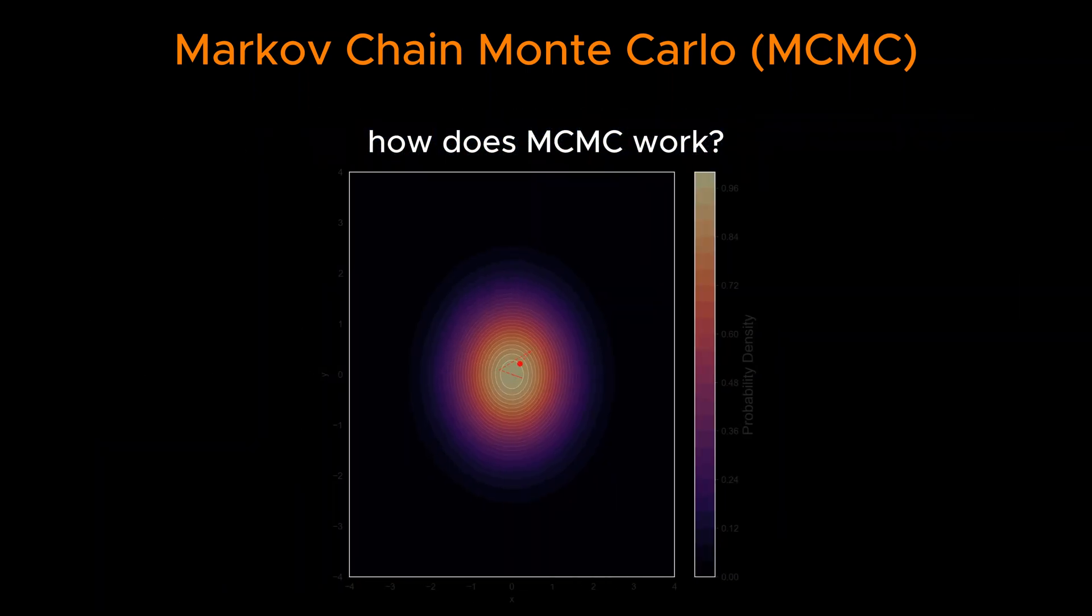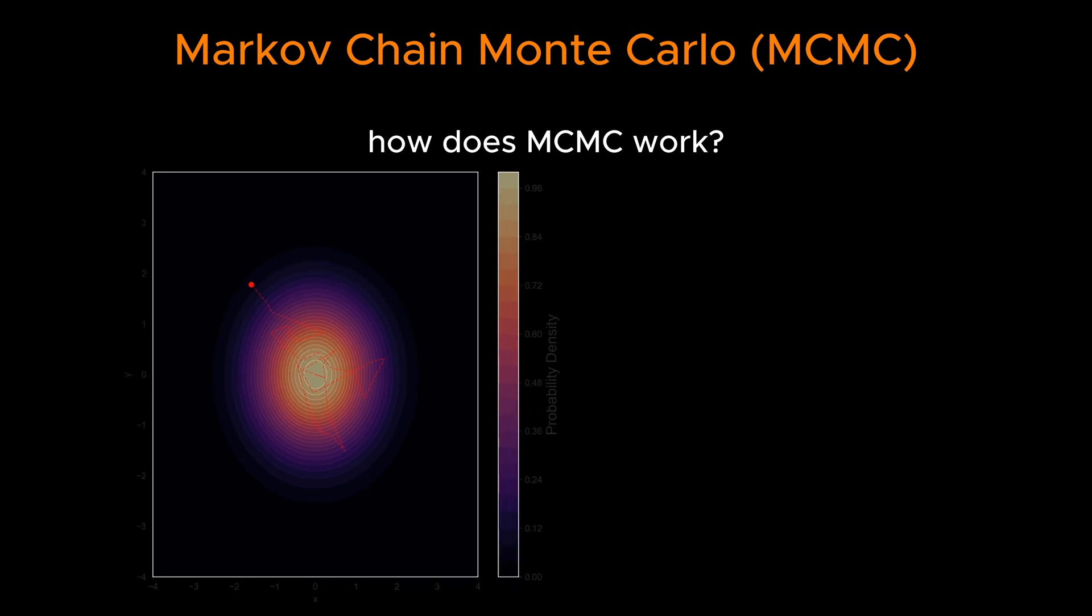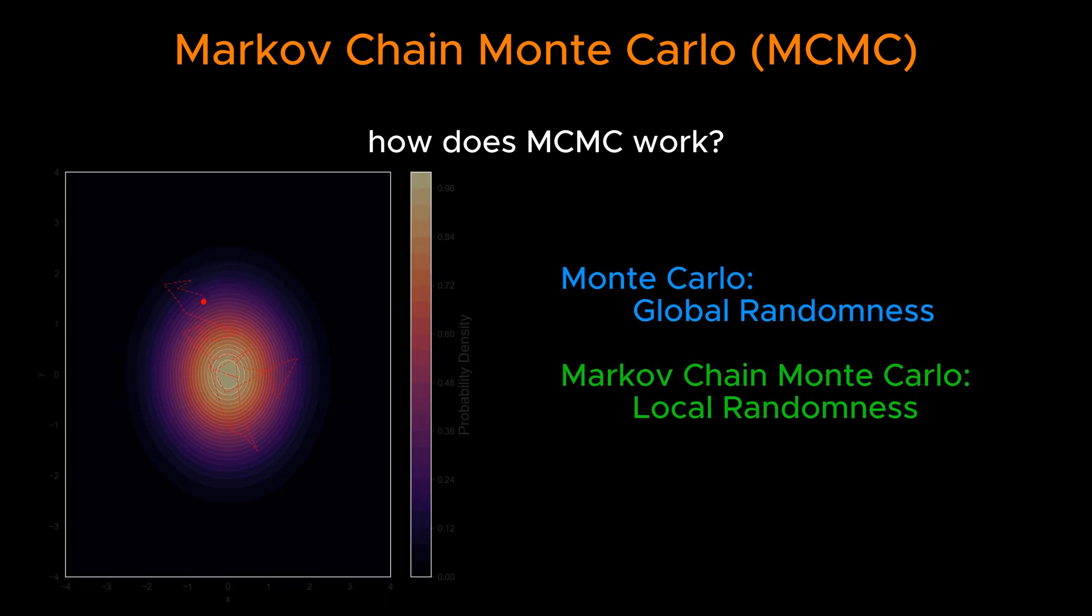Instead, by only allowing the ant to move one step at a time from its current position, we ensure that it explores the terrain in a connected and meaningful way. This is analogous to how Markov chain Monte Carlo works.